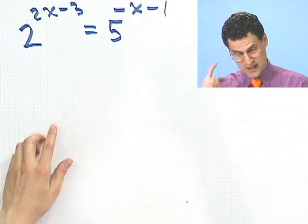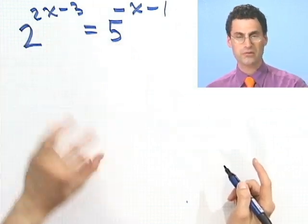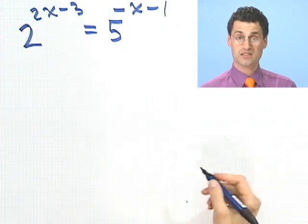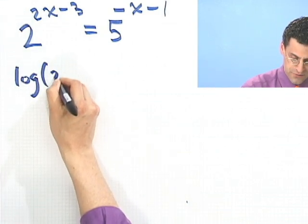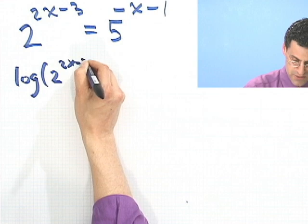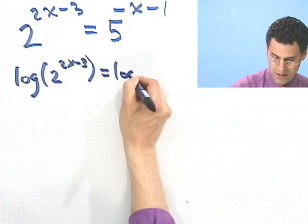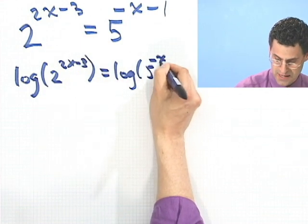So what do I do? Well, what I do is I see that there's no way of making a 5 a 2 or 2 a 5 an easy way, so I'll just take logs of both sides. If I take logs of both sides,